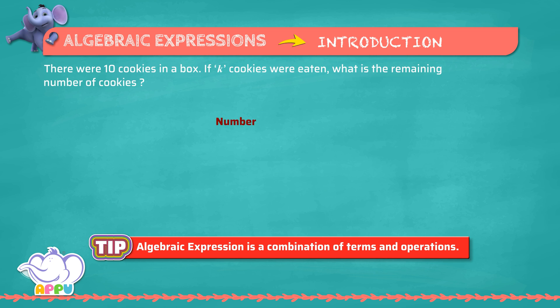Number of cookies in a cookie jar equals 10. K cookies were eaten. Since the number of cookies have reduced by k, we use subtraction. Remaining cookies equals 10 minus k.